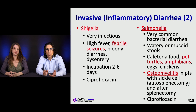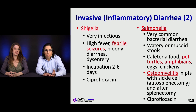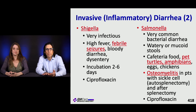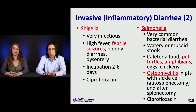Salmonella is really common, associated with watery or mucoid stools. Sometimes improperly cared-for cafeteria food is a source. A number of pet reptiles and amphibians carry salmonella. Backyard chickens, increasingly popular, are associated with salmonellosis. This can cause osteomyelitis, especially in patients with sickle cell or splenectomized patients. The first-line treatment is fluoroquinolones.